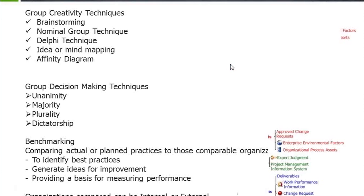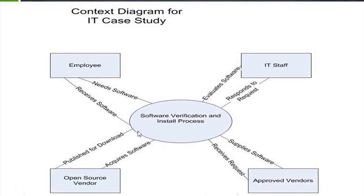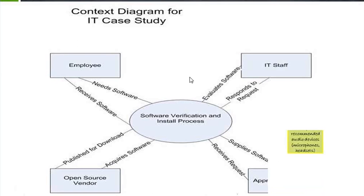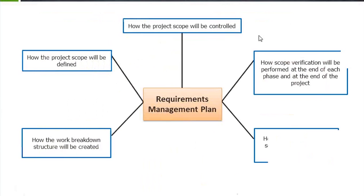We saw the example of a mind map. We also saw a context diagram where in the middle we have the process, on the left-hand side we have all the inputs, and on the right-hand side all the outputs. An affinity diagram is where post-its are used and all the points are mentioned there, then grouped under certain headings for better understanding and more structured discussion.